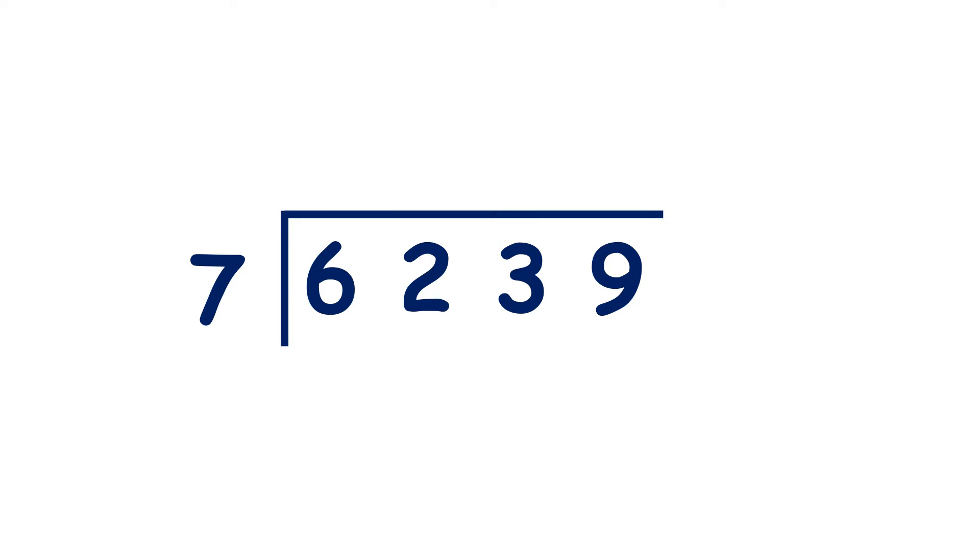Now, 6,239 divided by 7. 6 divided by 7 is 0, remainder 6, but let's take the first two numbers together. 62 divided by 7 is 8, remainder 6.